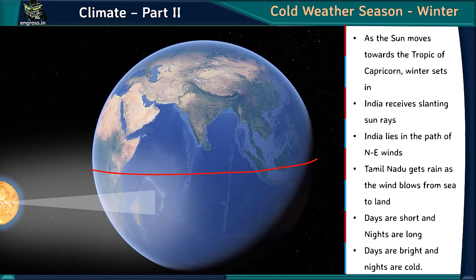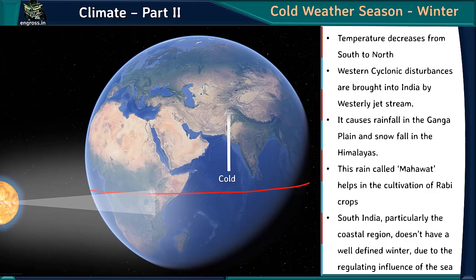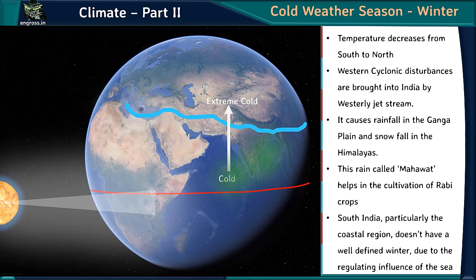India's cold weather season (winter) sets in as the sun moves towards the Tropic of Capricorn. India receives slanting sun rays, lies completely in the path of northeast trade winds that originate on land and don't cause rainfall — except the part blowing over the Bay of Bengal, which causes some rainfall in Tamil Nadu. Days are short and bright, but nights are very cold. Temperature decreases from south to north. Western cyclonic disturbances brought by the westerly jet stream cause Mahavad rainfall in the Ganga Plain and snowfall in the Himalayas, helping rabi crop cultivation. South India lacks a well-defined winter due to the sea's regulating influence.